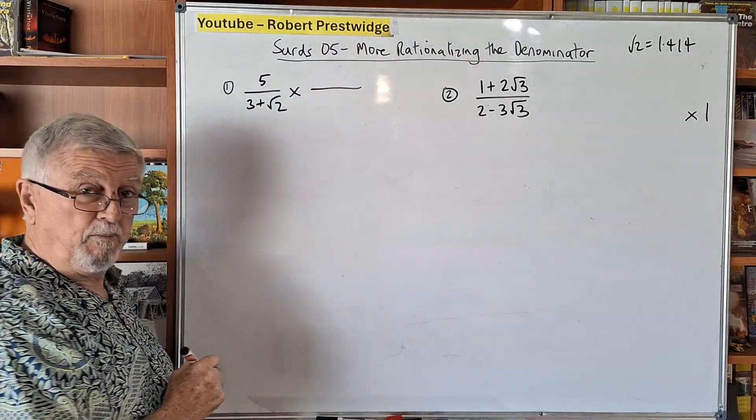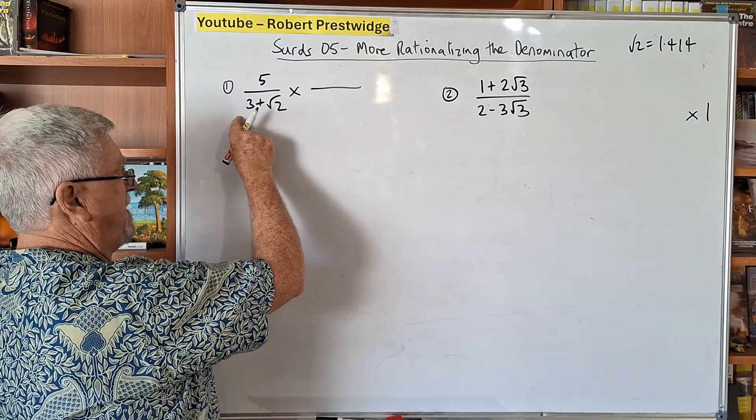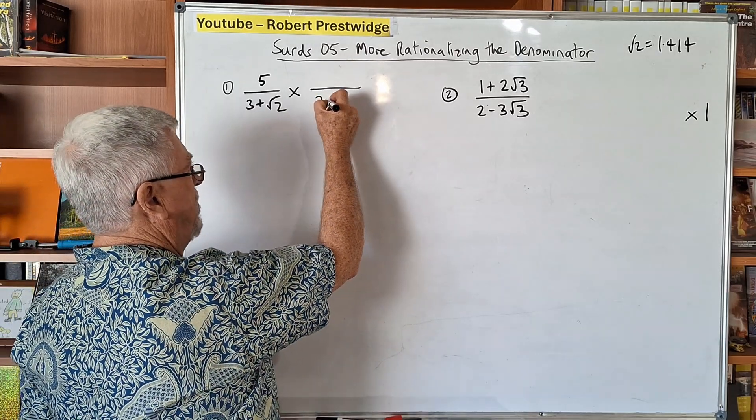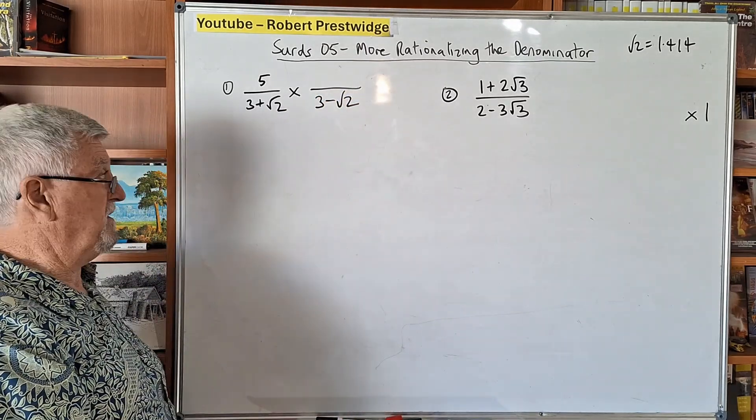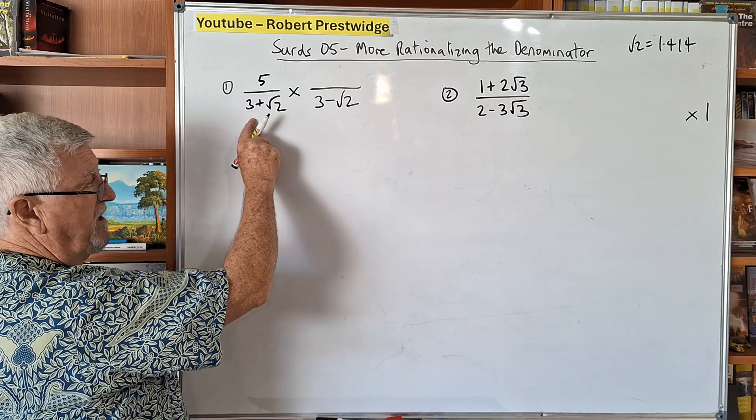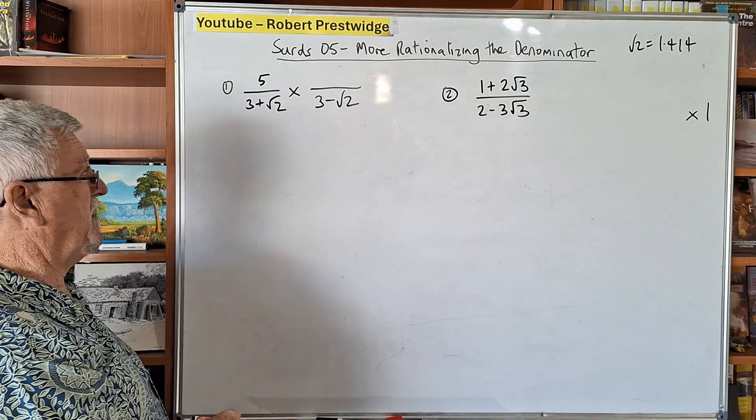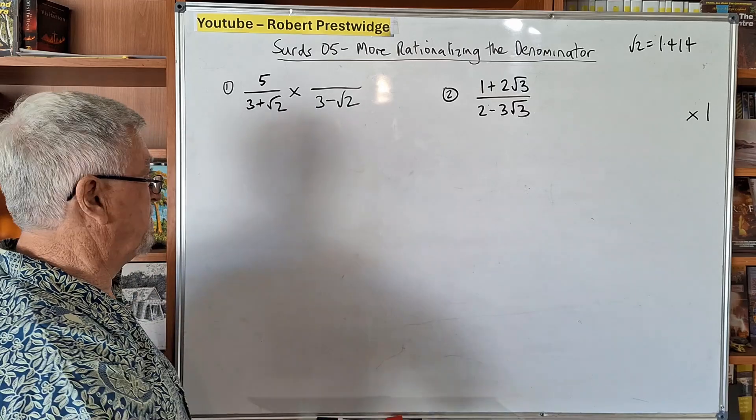So people had to think of something more creative to get rid of that square root. And here's what it is, so simple. You write the opposite of that. So instead of having 3 plus root 2, we write 3 minus root 2. This actually becomes a difference of two squares, and the difference of two squares eliminates the middle terms.